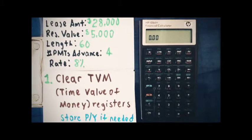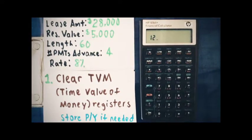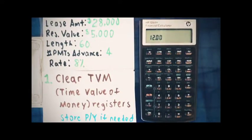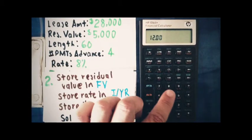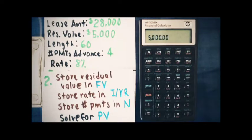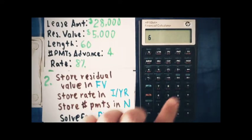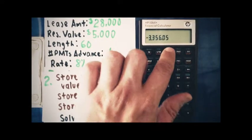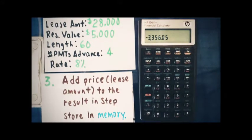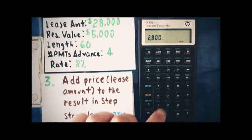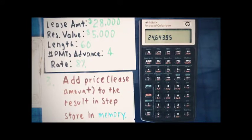First we clear all the time value of money registers and store 12 for monthly payments in the payment per year register. Step 1 is complete. Next, we store the residual value in future value — $5,000 — and store the rate of 8% in the I/YR register. The length of the term is 60 months in N, and we solve for present value, getting negative $3,356.05. In step 3, we add the price of $28,000 to get $24,643.95, and store that in memory 0.